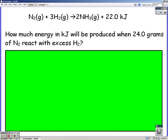We can use this thermochemical equation in a mass to energy problem basically just using stoichiometry. Always start with what they give you, in this case 24 grams of nitrogen. We're converting it to energy.